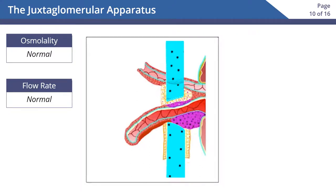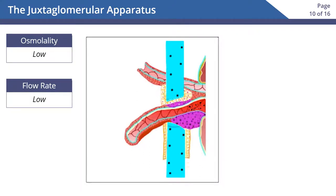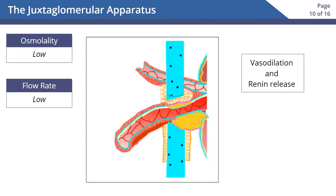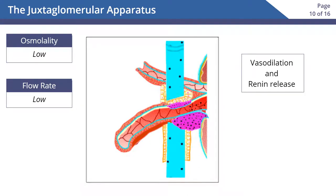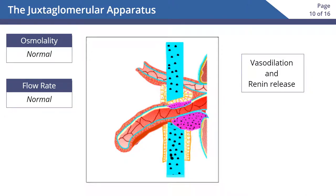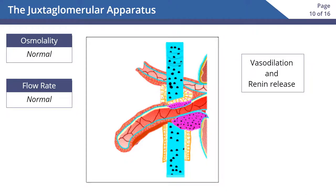Here's another example: when filtrate has low osmolality or decreased flow rate, the macula densa cells sense this, which leads to vasodilation of the afferent arteriole and stimulation of the JG cells to release renin. This will return filtrate flow rate and osmolality to normal.